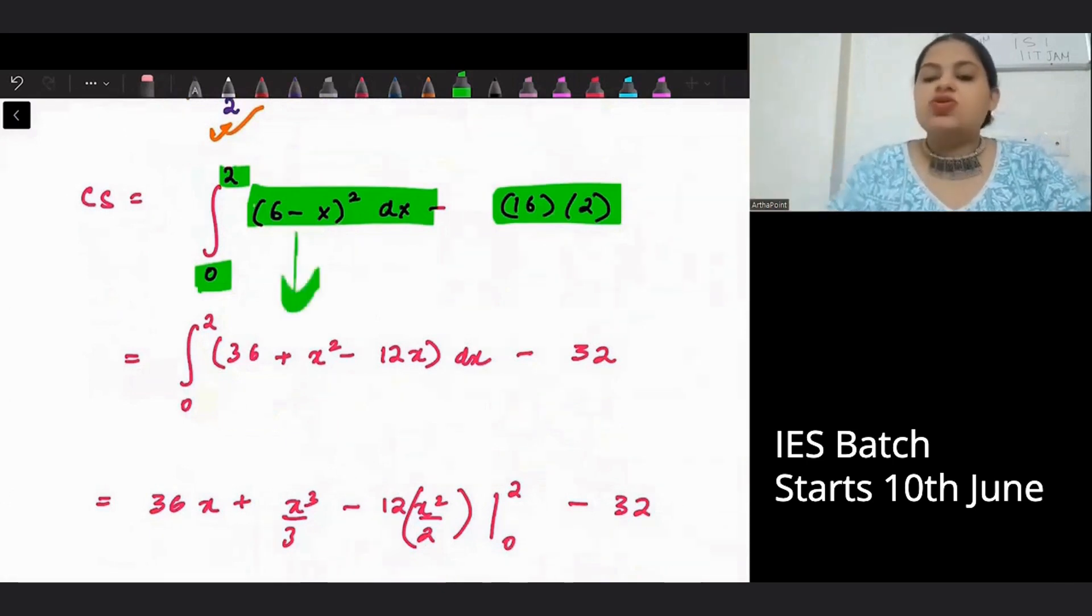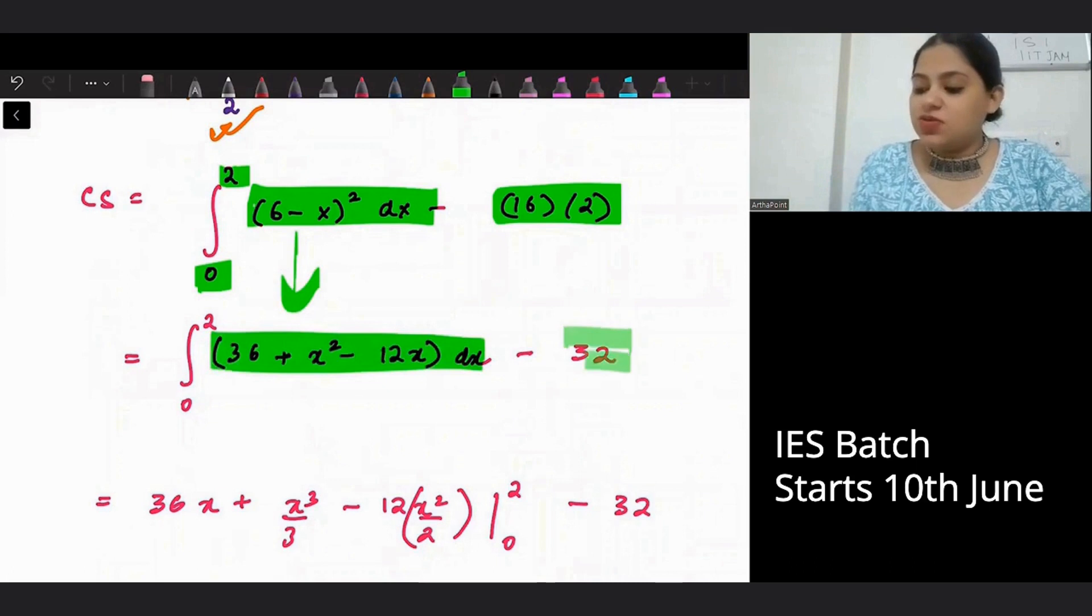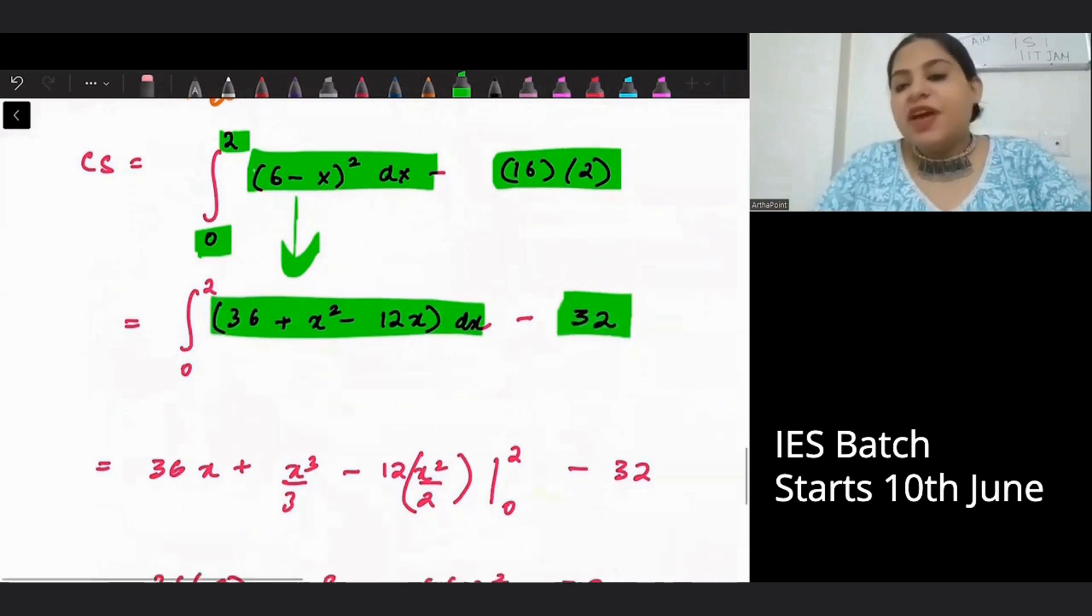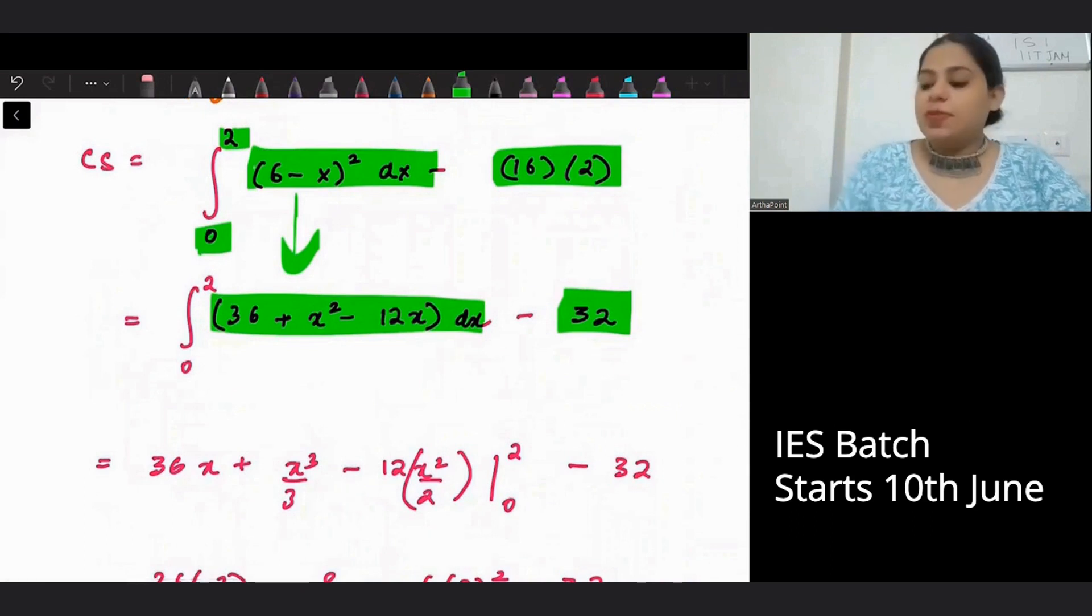Now, integration is simple. I can just open this up also. So 6 minus x whole square will be 36 plus x square minus 12x minus 32. When you integrate this, what will you get?